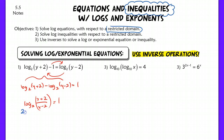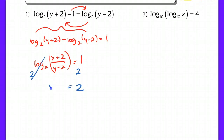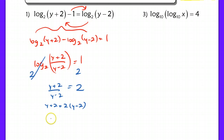Now that I can look at this equation, I can exponentiate both sides using the base of 2. So I have 2 to the log base 2 of this expression equaling 2 to the first power. On the left side, these cancel, leaving me with just y plus 2 over y minus 2 equaling 2. Multiplying both sides by y minus 2 gives a basic linear equation. The solution is y equals 6, which satisfies our original domain that y has to be greater than positive 2.